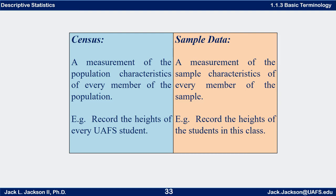In theory they do that, but in practice it's hard to actually count every single person — though they do make an attempt. What we do more often, since measuring everybody is either impossible, costly, or time prohibitive, is take a sample — hopefully a representative sample — and measure it. This would be sample data: a measurement of the sample characteristics of every member of the sample. For example, we record the heights of students in a particular class.